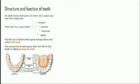The location of the incisors is centrally at the front. Just at the back of the incisors are canines, followed by premolars, and then molars. Incisors are 8 in number, canines are 4, premolars are 8, and molars are 12.